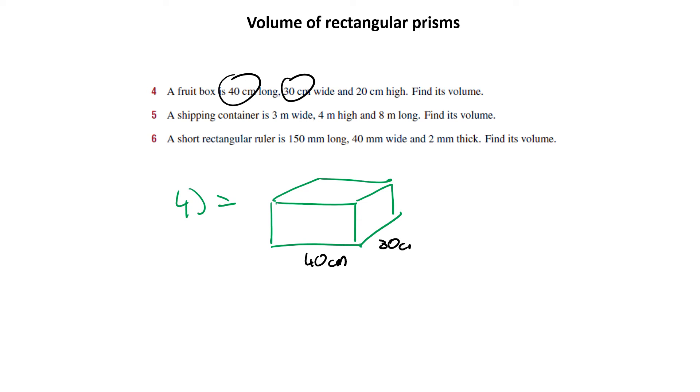30 centimeters wide, I'm going to put 30 centimeters there. 20 centimeters high. And so if we know our volume, so sometimes it's really useful to do a drawing because it can help you work out what needs to go where. And that means I'm going to go volume equals length times width times height. And so my length is 40, my width is 30, and my height is 20.